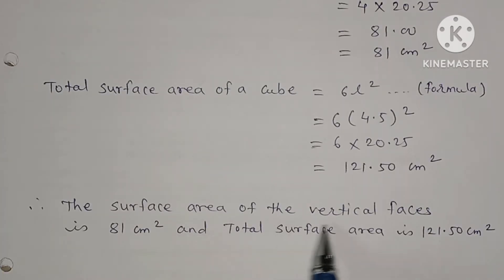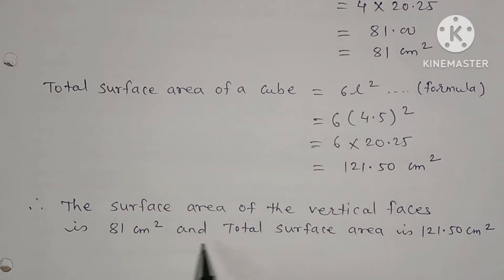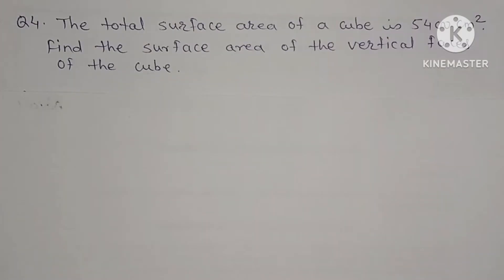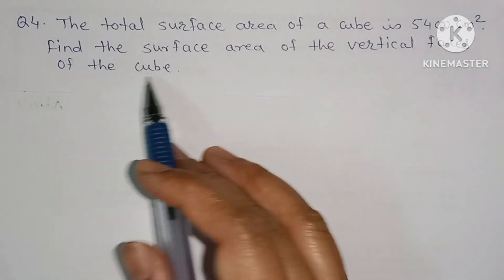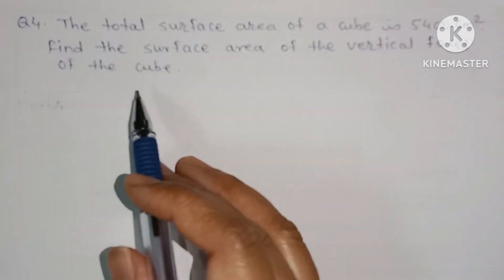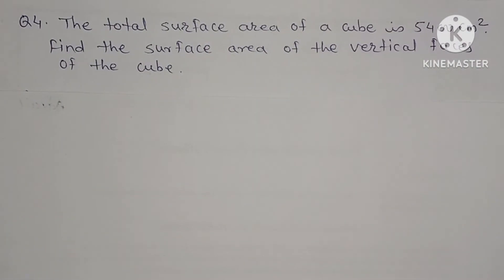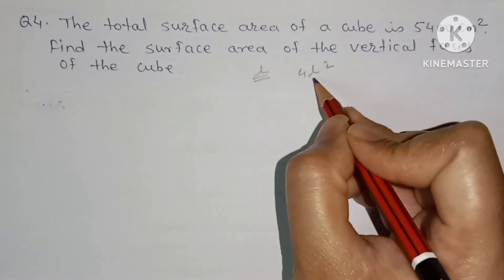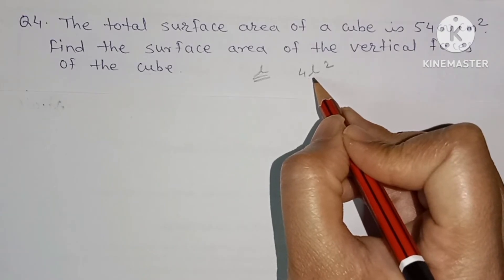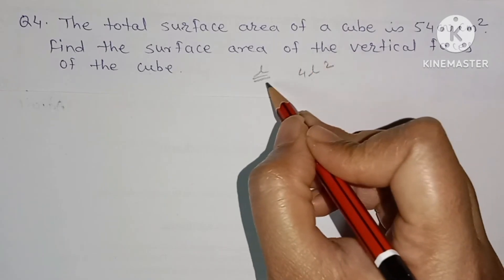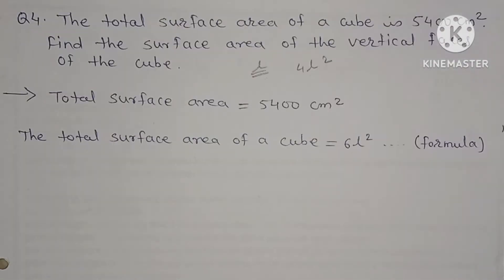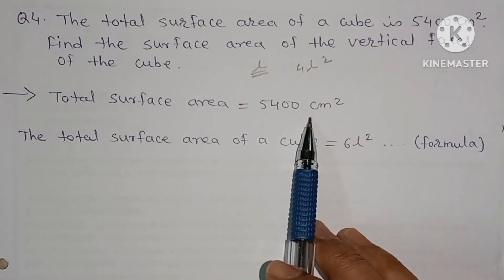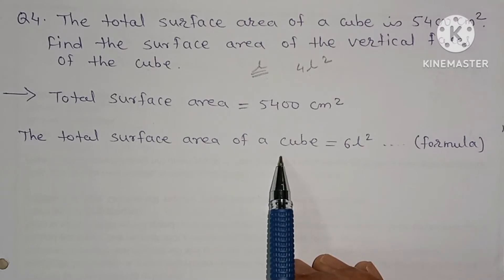Therefore the surface area of the vertical faces is 81 square centimeter and total surface area is 121.50 square centimeter. Next question: the total surface area of a cube is 5400 square centimeter. Find the surface area of the vertical faces. The formula for vertical faces of the cube is 4L². First we will find the value of L.